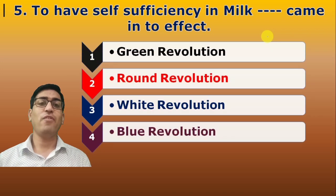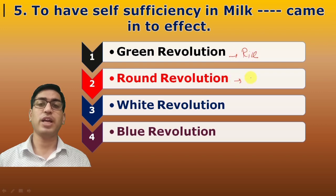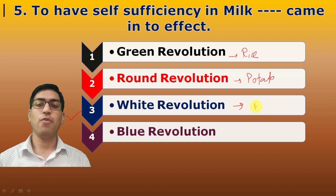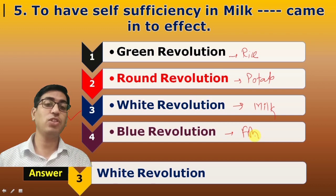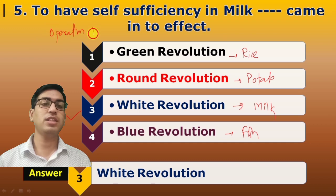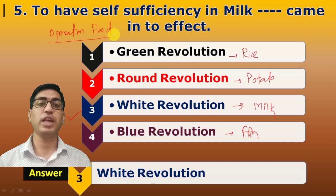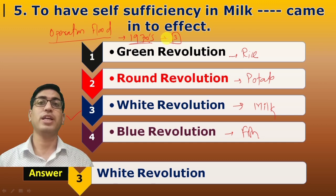Fifth question: To achieve self-sufficiency in milk, which revolution came into effect? Keep in mind: the Green Revolution is for rice and wheat; the Round Revolution is for potato; the White Revolution is for milk; and the Blue Revolution is for fish. To increase milk availability, India had the White Revolution through Operation Flood, which ran in three phases starting in the 1970s. The milkman behind it was Dr. Verghese Kurien — the Father of the White Revolution.